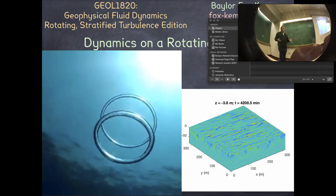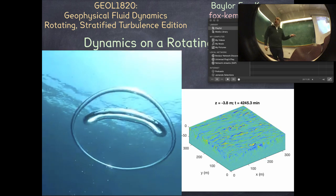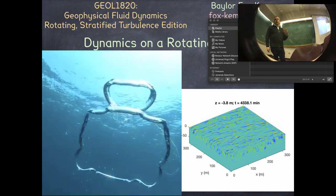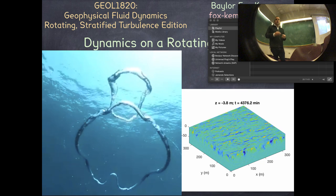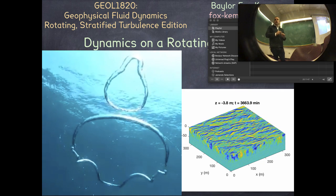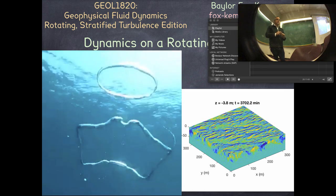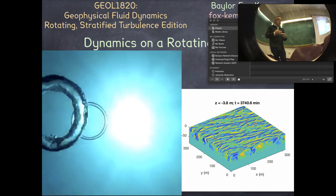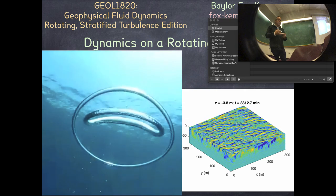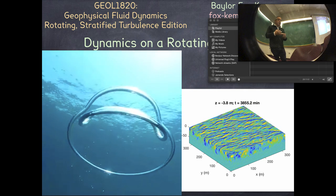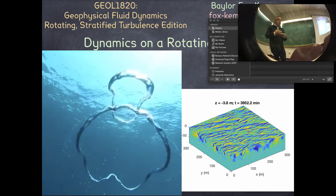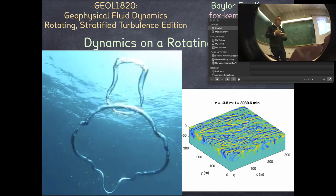Just like the Boussinesq equations filtered out sound waves to make numerical solving more efficient, the planetary geostrophic and quasi-geostrophic equations filter out gravity waves. This makes them appropriate for slow, large-scale phenomena: energy transport, climate change, paleoclimate. We can't use them for coastal problems like tsunamis or wave inundation, because the gravity waves responsible for those are removed from the system.